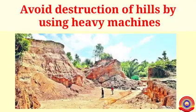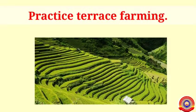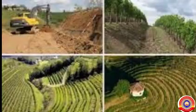Fourth, avoid destruction of hills by using machines. And the last one: practice terrace farming — it helps water to seep down into the soil and prevents soil erosion. Make the people aware of the necessity to protect our environment.